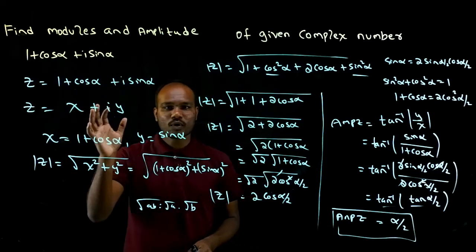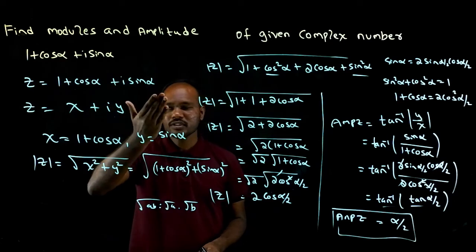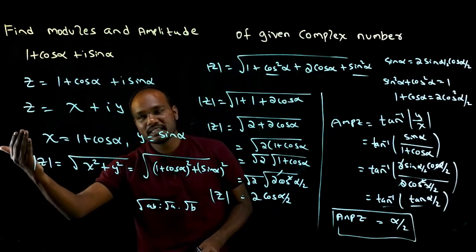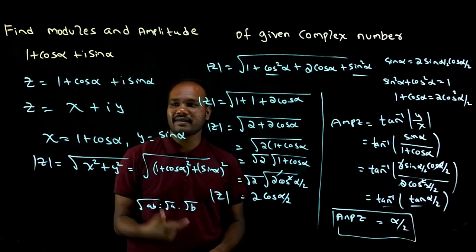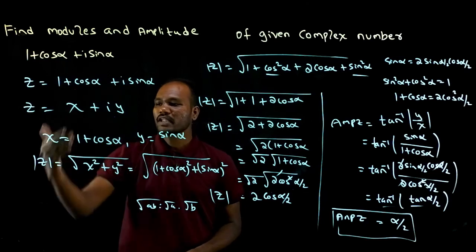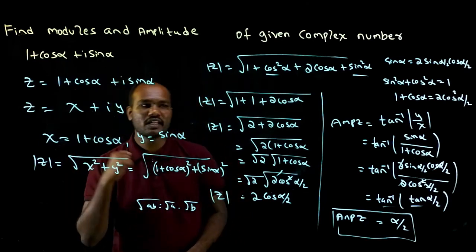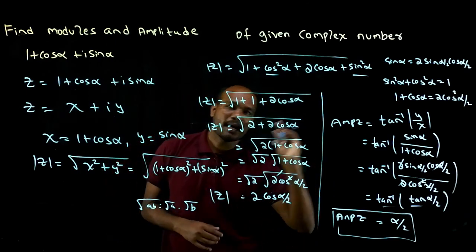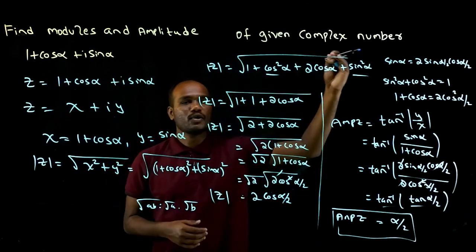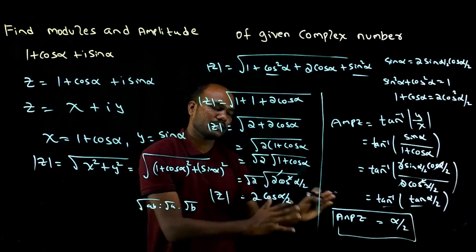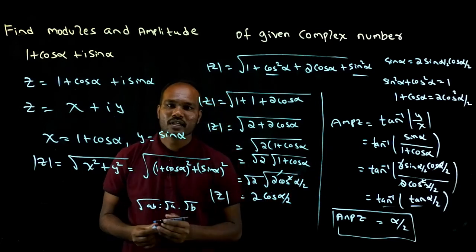Let's revise what we have done. We were given Z. We compared this Z with the standard form X plus iY. Comparing, we know the X value and Y value. Once we know X and Y, we have the formula for modulus and amplitude. Substitute in the formulas, use the identities, and we get to the solution.